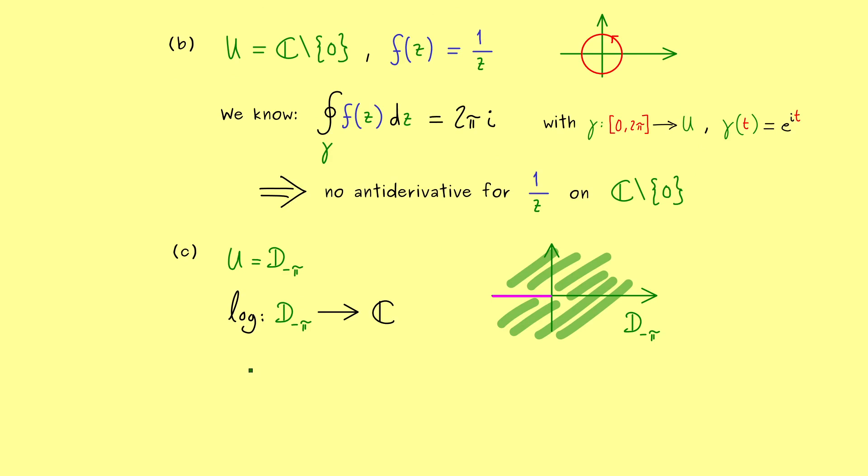Now moreover in the same way as we have done it in real analysis we can show that the derivative of the logarithm function is 1 over z. So this is not hard to show and indeed it shows us that the logarithm is an antiderivative of 1 over z. However please note now the domain is smaller than the one before.